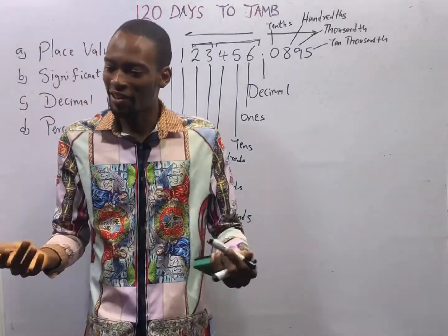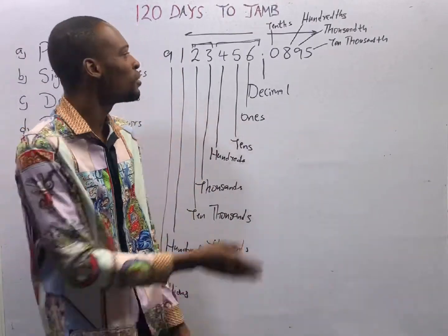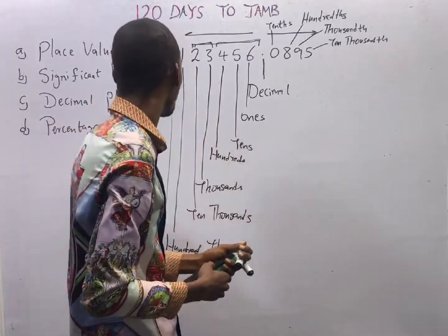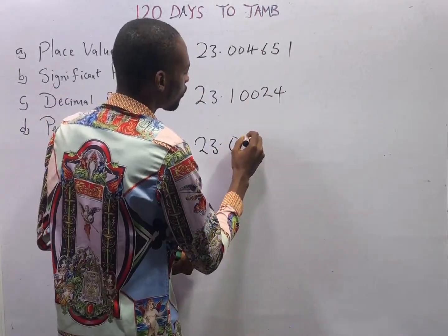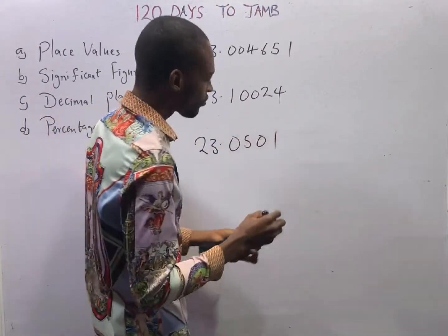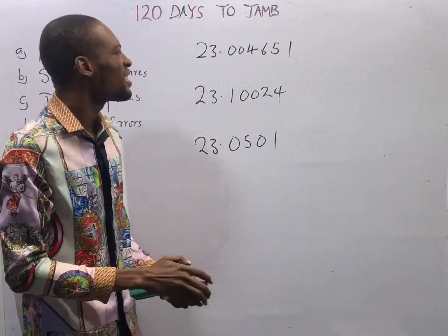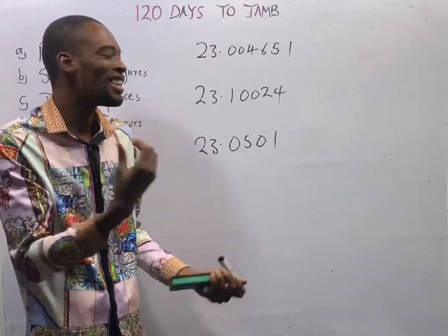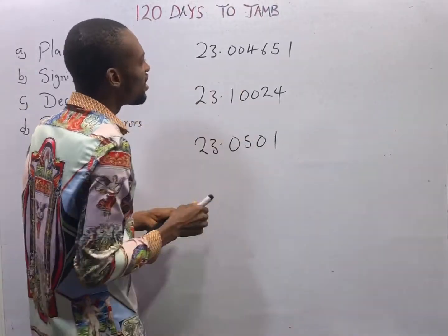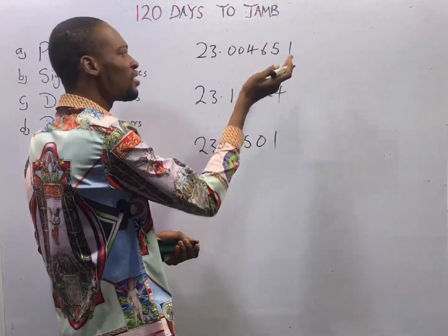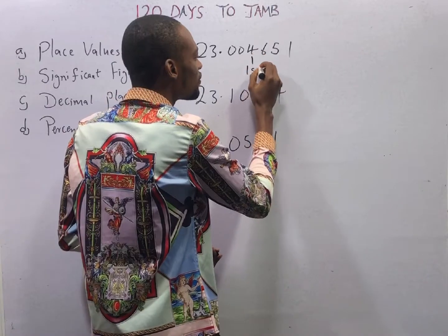Which means, when you are given a number and asked to find the place value, you will simply know the place value of that number by its position. Up next is significant figures. The first significant figure is the first digit after the decimal point that is not zero. So for this number, the digit after the decimal point that is not zero is 4, which means 4 is the first significant figure.